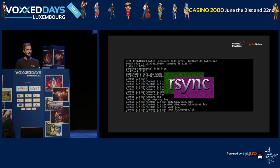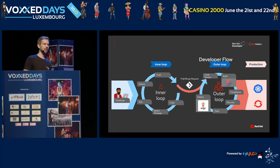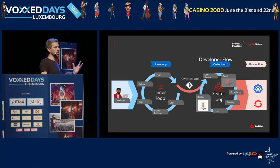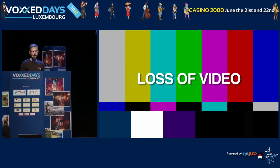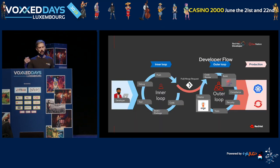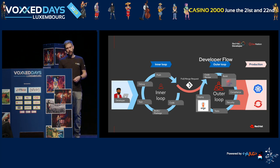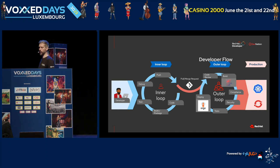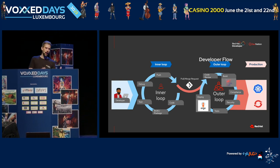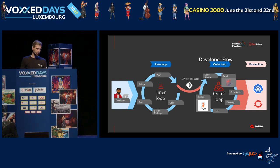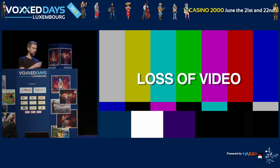You may have seen this kind of developer flow, where you're developing on your local machine in your inner loop — doing your coding, testing and everything. At some point you create a pull request or merge request, and you go into the outer loop, where more automation is happening: CI/CD, delivery, security tests, compliance checks, and then we go to production. Today, we're focusing on the outer loop.